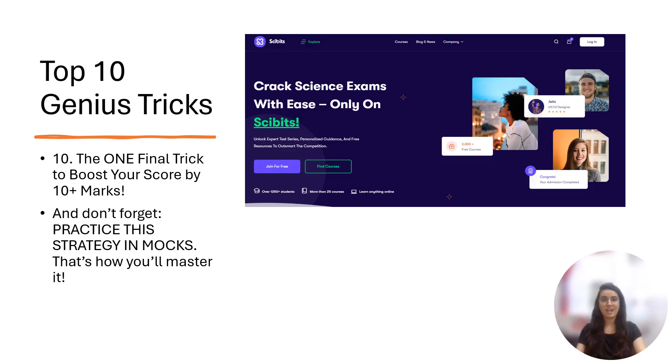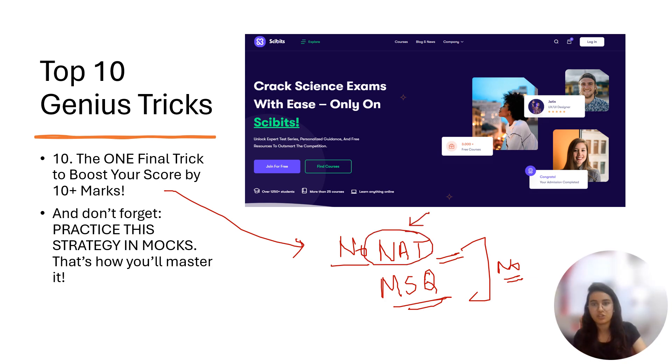Here is the final trick to score 10 more marks: do not leave any NAT question, do not leave any MSQ question blank because there is no negative marking. Even if you feel stuck in that question, make an educated guess. It's a very vague way, but you can put zero and one if you have no idea. Sometimes it works.